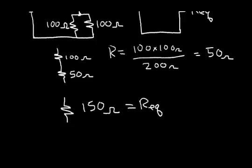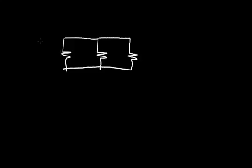Let's do another sample problem. Let's say we have three resistors in parallel. To make the math simple, let's say they are 60 ohms, 60 ohms, and 30 ohms. We previously came up with an equation for the equivalent parallel resistor when we had two resistors, but now we have three resistors — so what do we do?